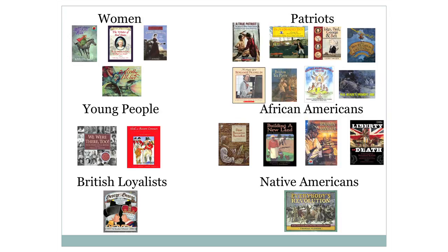After each lesson, the teacher would engage the students in a critical literacy discussion. They would talk about the text that they were reading and ask questions. The teacher broke down the quality children's literature into six groups, each portraying a different perspective: women, Patriots, young people, African Americans, British Loyalists, and Native Americans.